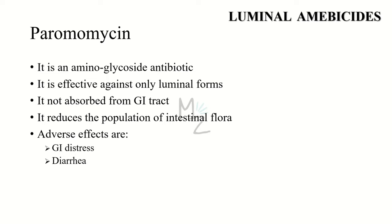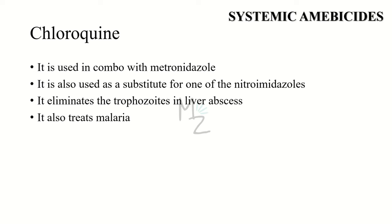The second luminal amebicide is paromomycin, an aminoglycoside antibiotic. It is effective against only luminal forms of Entamoeba histolytica because it is not significantly absorbed from the GI tract. Paromomycin is directly amebicidal and also exerts its anti-amebic actions by reducing the population of intestinal flora. Gastrointestinal distress and diarrhea are the principal adverse effects.